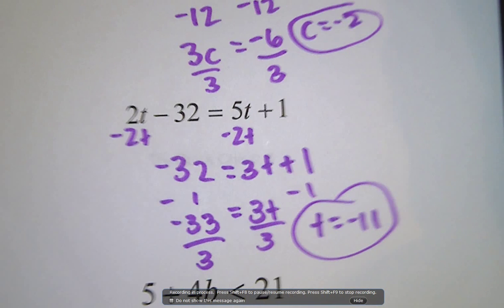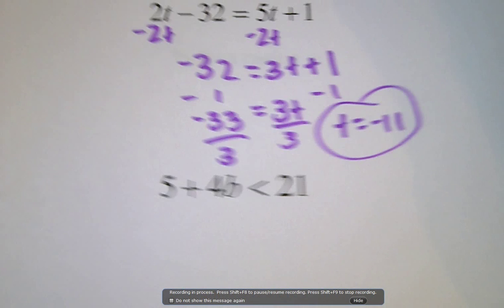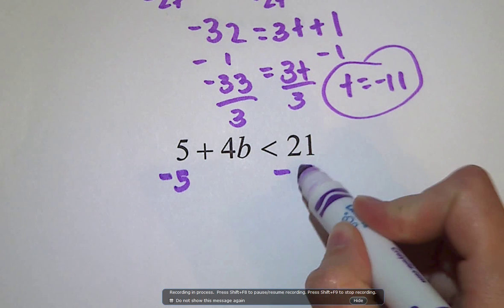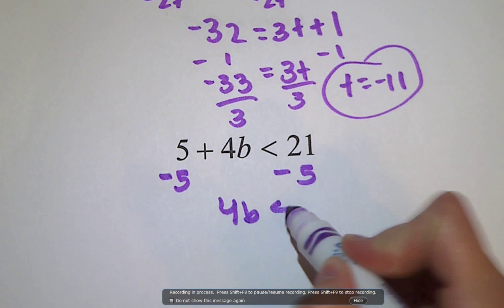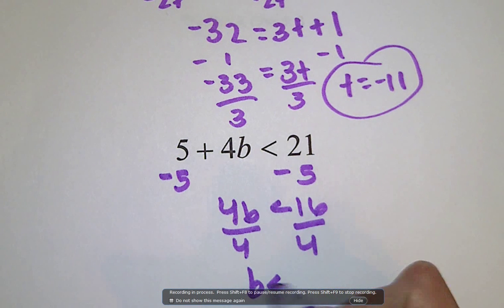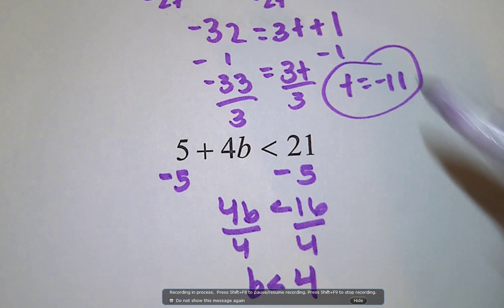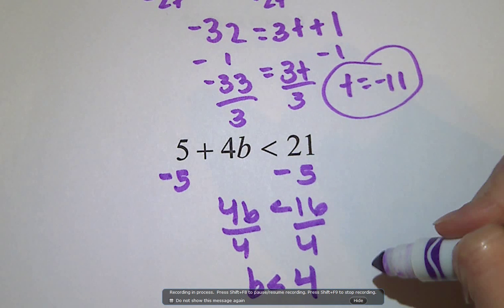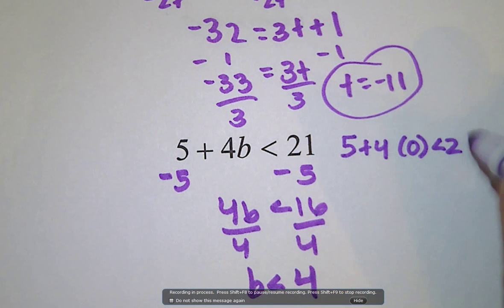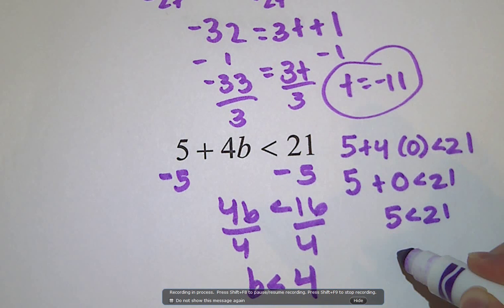Now let's look at what happens when we have an inequality. It's the exact same way, except for that rule that if you multiply or divide by a negative, then you have to flip the sign. On this one, I would subtract 5 from both sides, and I would get 4b is less than 16, divide by 4. I didn't divide by a negative, so my sign stays the same, and I would have b is less than 4. I could check 0: 5 plus 4 times 0 is less than 21 — 5 is less than 21, yes, so I know I did it correctly.